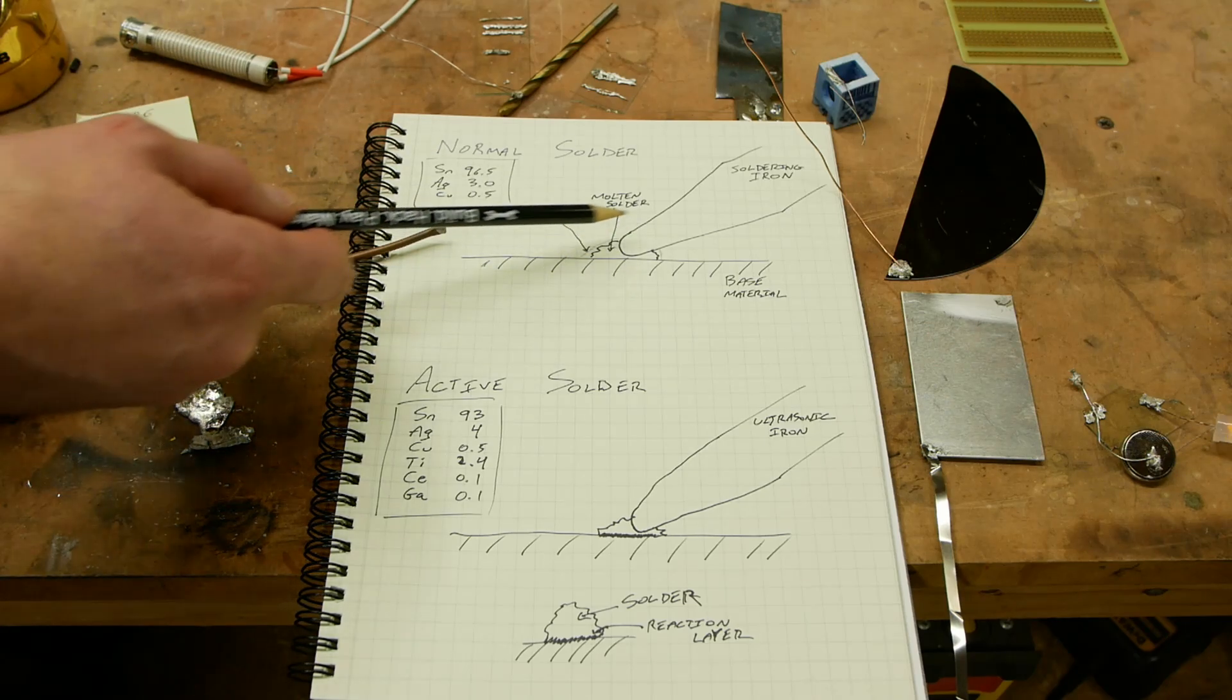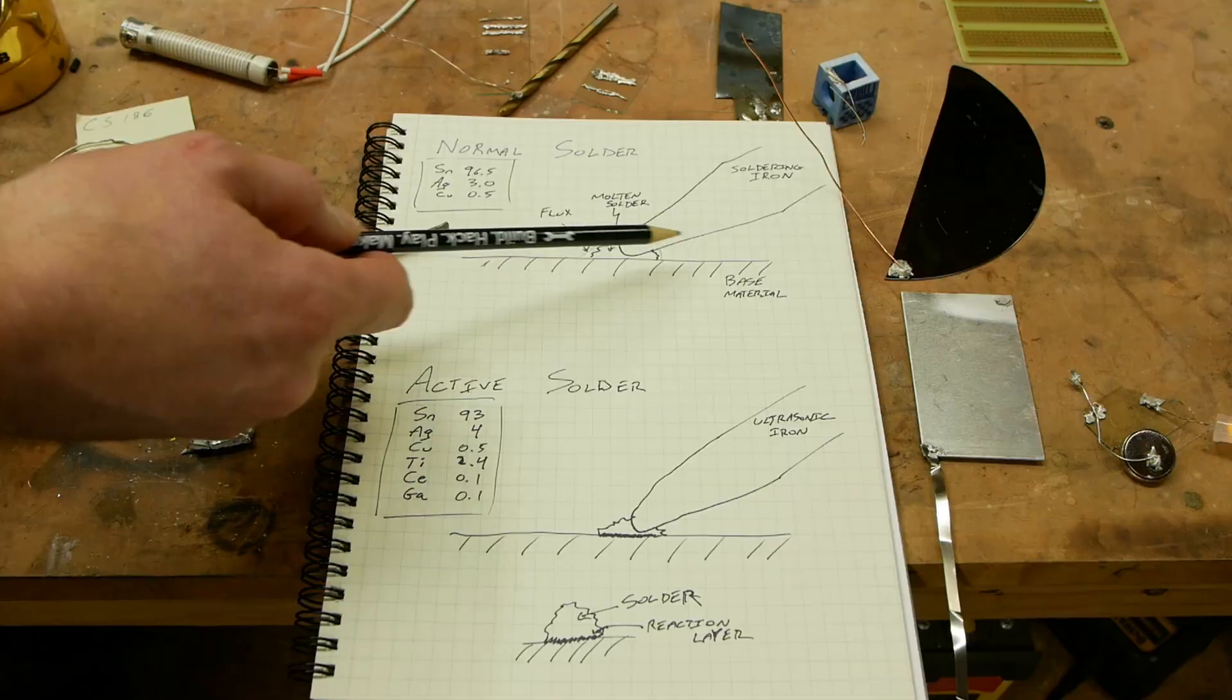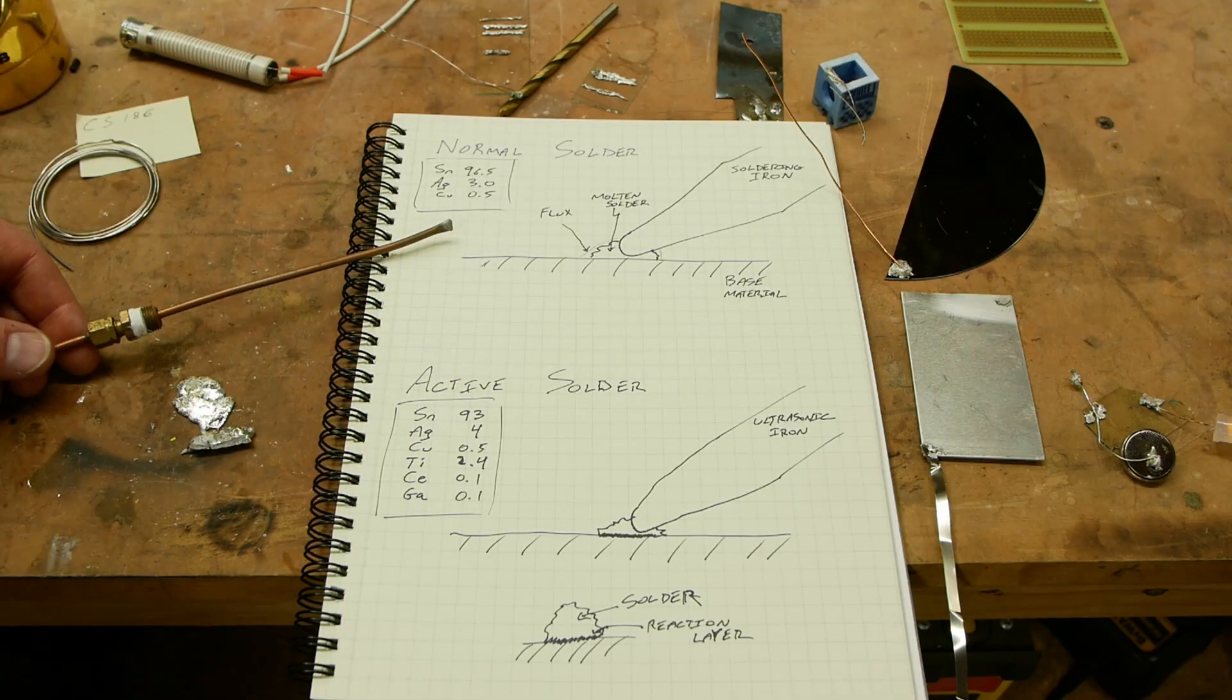And then we have metal-to-metal contact. And then the flux also creates this little bubble, like literally an encapsulation of the joint, so that oxygen can't get in there while you're working.